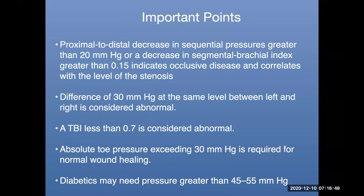Some important points: proximal to distal, a segmental pressure drop greater than 20 mmHg or a decrease in segmental brachial index greater than 0.15 indicates occlusive disease correlating with the level of stenosis. A difference in segmental pressures from right to left of 30 or more means the lower-pressure side is abnormal. A TBI less than 0.7 is considered abnormal. Absolute toe pressure is important in wounds — greater than 30 suggests some wound healing potential, though in diabetics with impaired microcirculation you'd want a higher pressure.